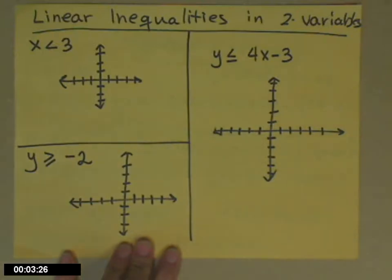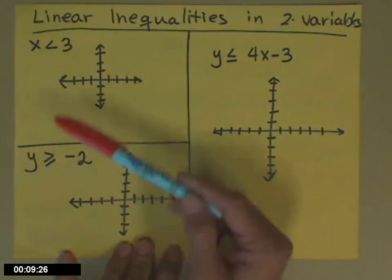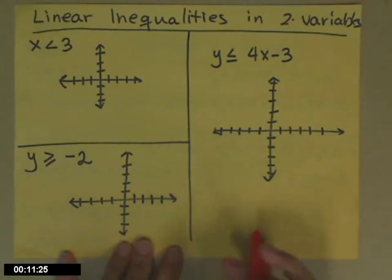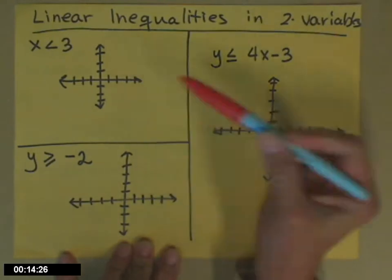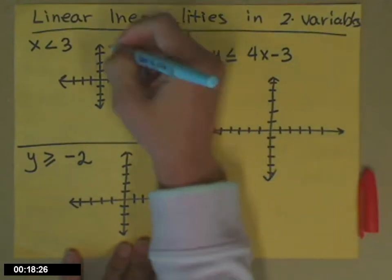Sometimes you'll be asked to solve linear inequalities in two variables. I have three examples here. In the first two, you'll see that there's actually only one variable in each of them, but we know that we're talking about two variables because I have the x-y axes drawn. You'll just have to get it in context and hopefully it will be clear.